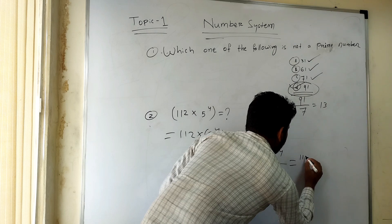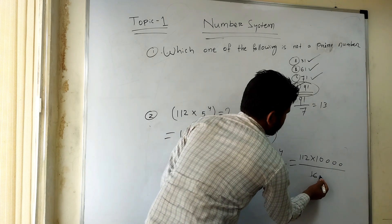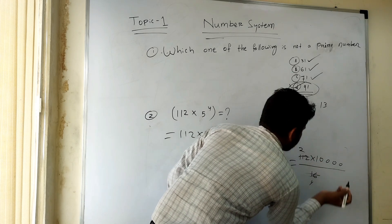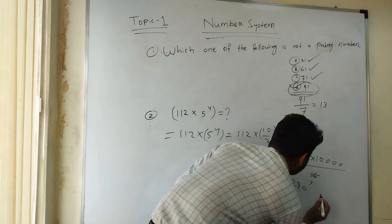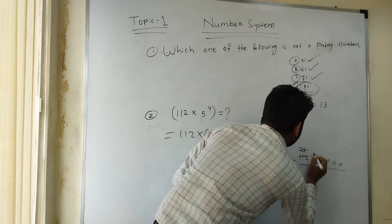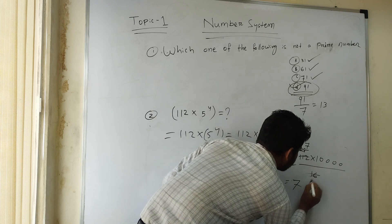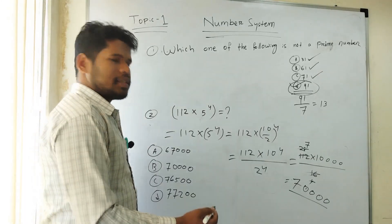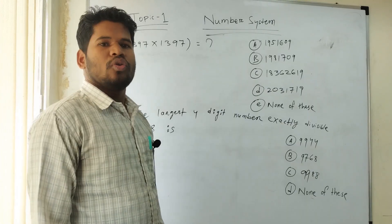That means 1,12 into 10,000 divided by 16. So if we divide: 1,12 into 10,000 gives 11,200, divided by 16 equals 700. We can get 7,200. That means the answer is 7,200. So option B is the right answer.